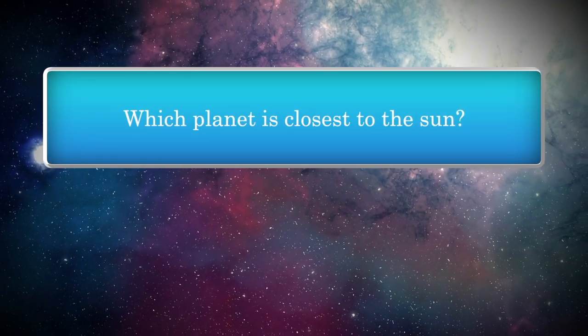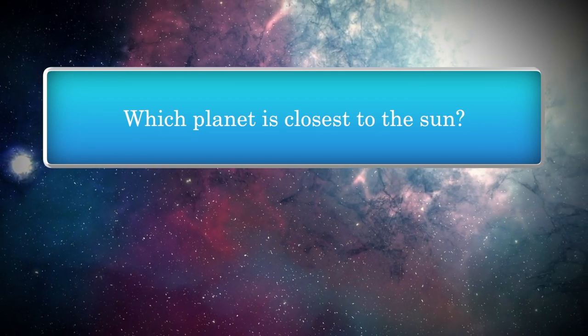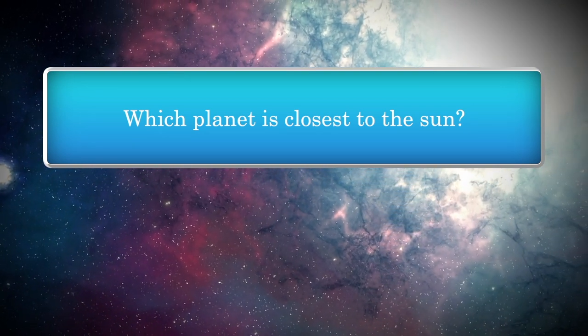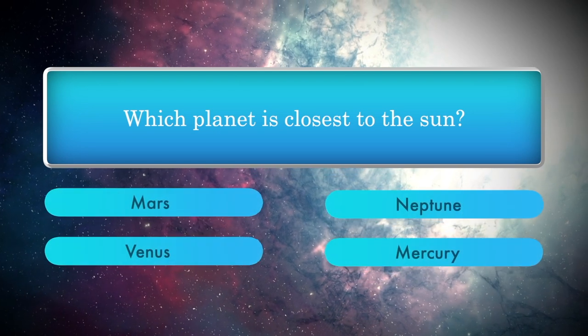Mars, Neptune, Venus, Mercury. Which planet is closest to the Sun? Options: Mars, Neptune, Venus, Mercury.